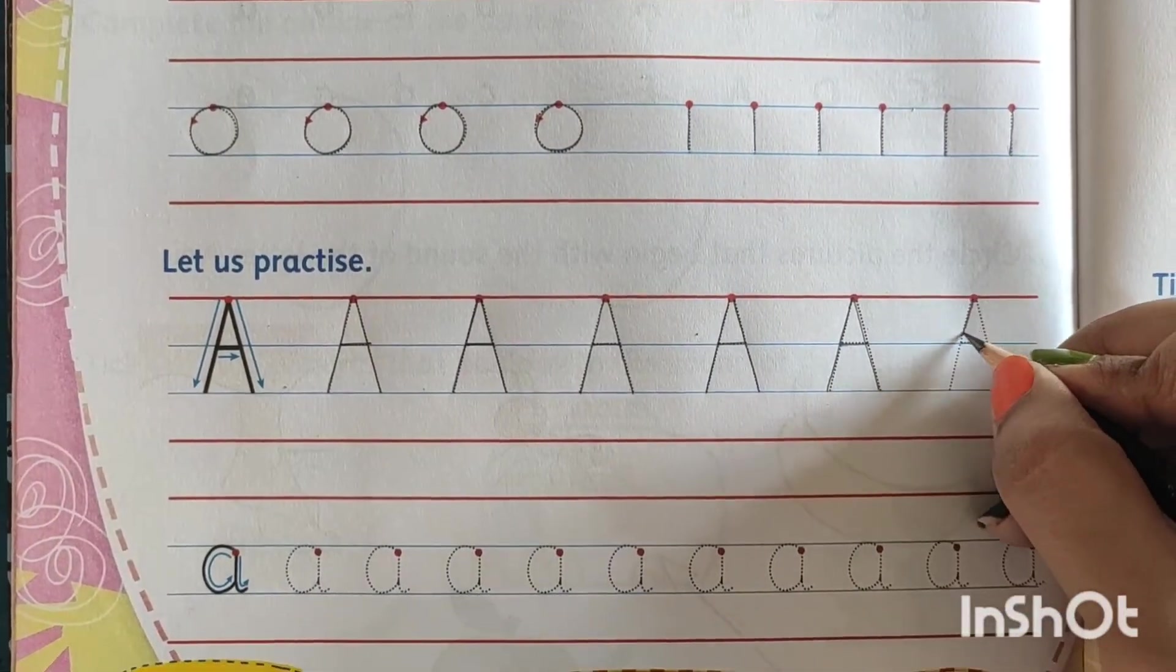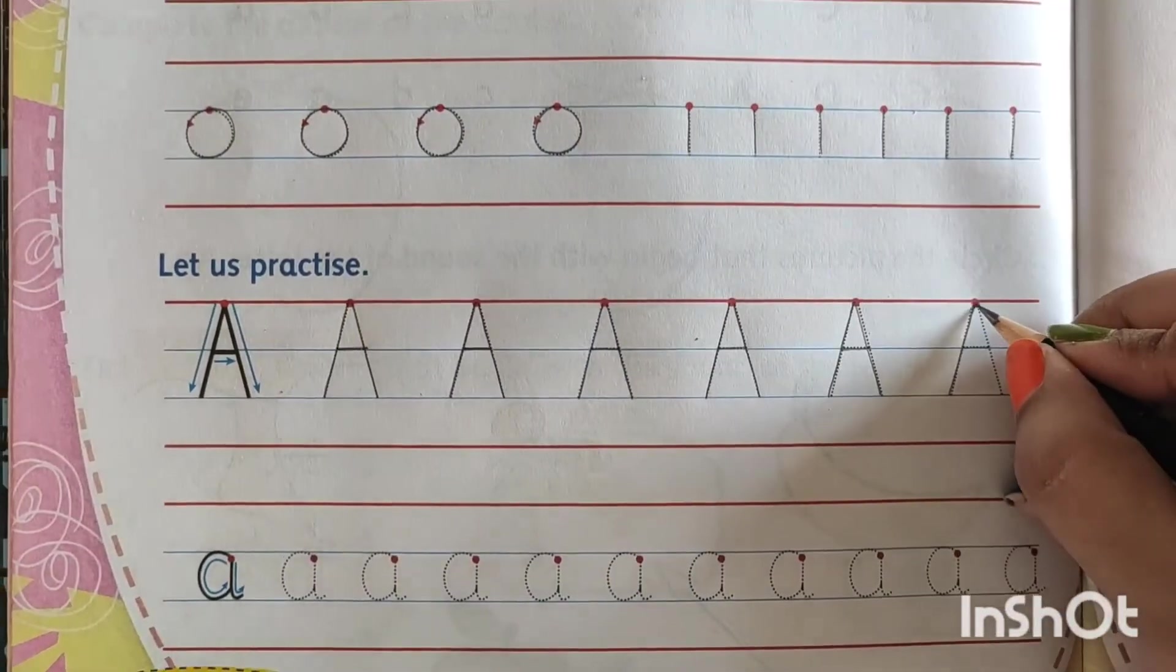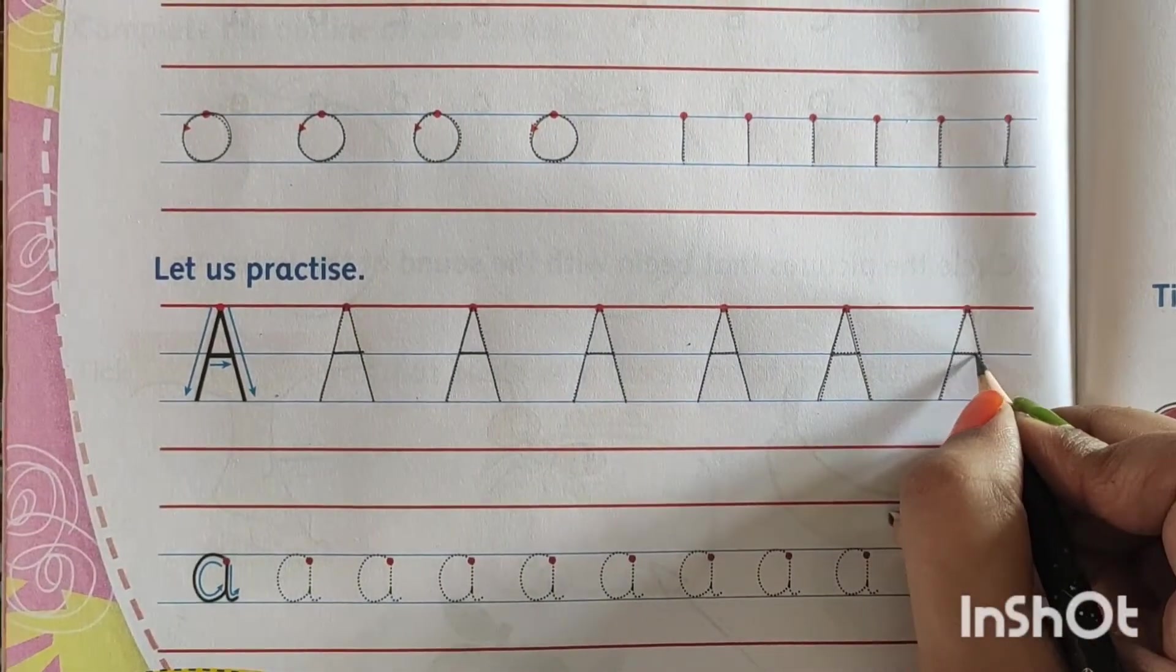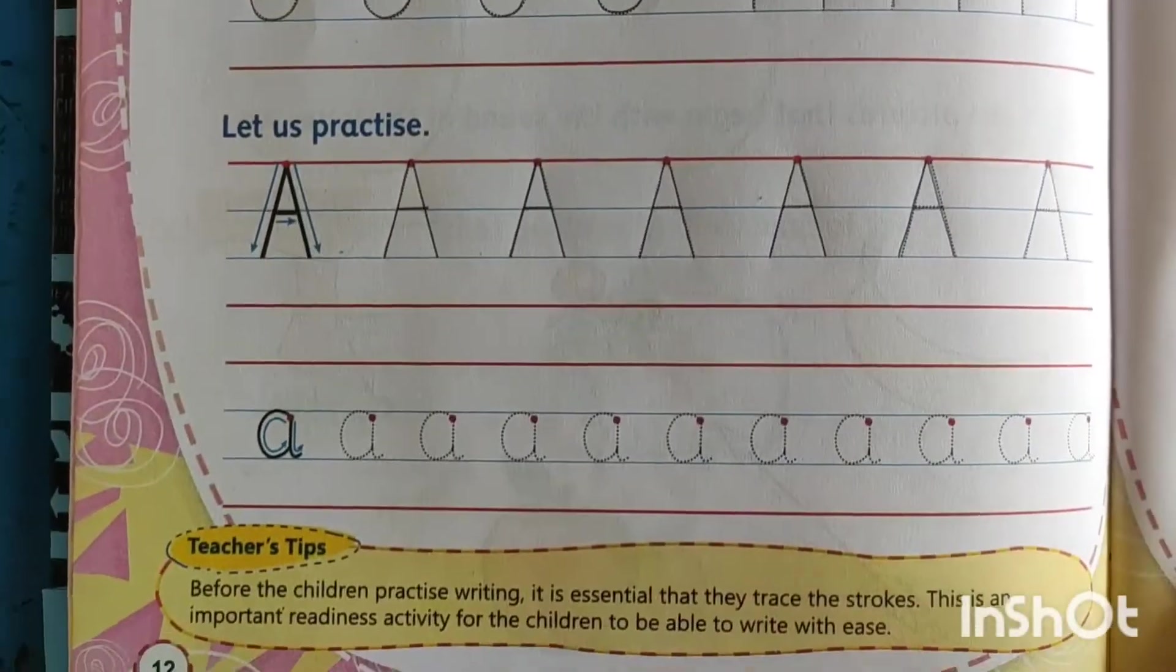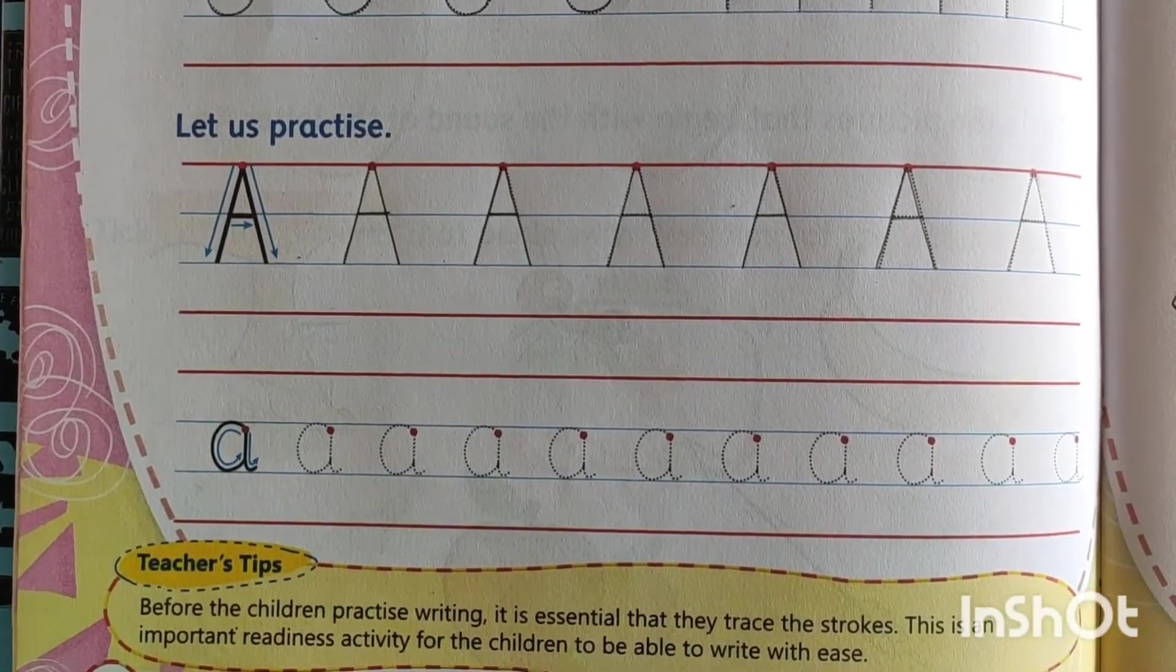Understood? So slanting line, another slanting line, sleeping line. Okay. So capital A we have completed.